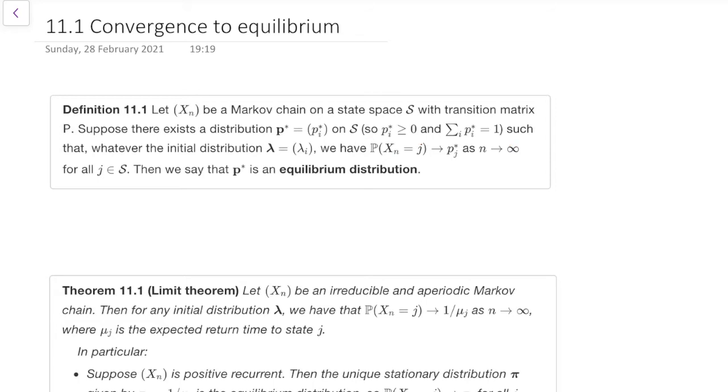And then we're saying that whatever the initial condition, as in no matter where we start from, and we're allowed to start from a random position, it doesn't have to be a deterministic position, we have this. The probability that we're in a given state j is tending to the value of pi_j. So if such a thing should happen, that this exists, then we call it an equilibrium distribution.